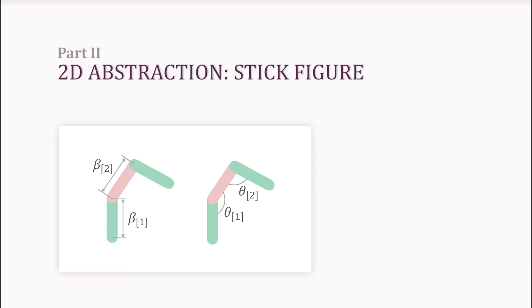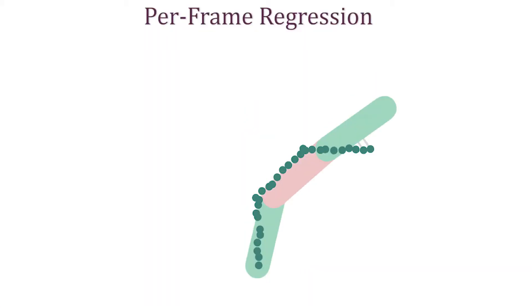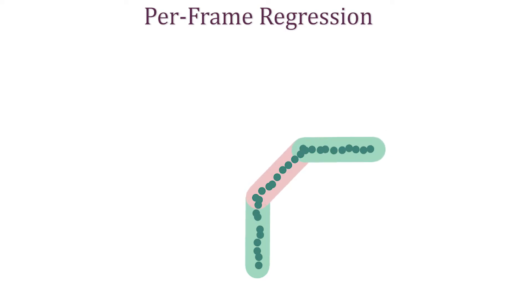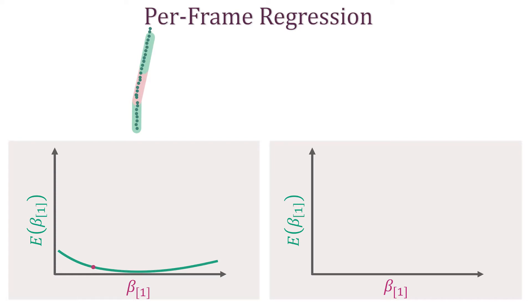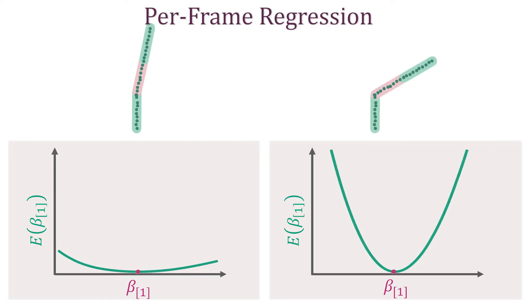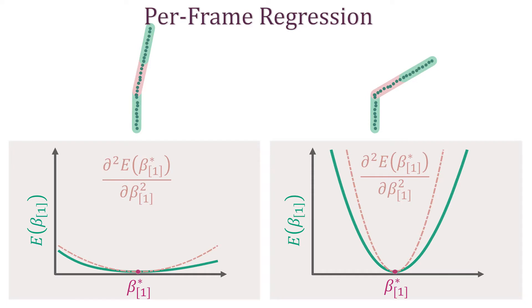Let us abstract a finger with a simple 2D stick figure. Our registration energy is the sum of closest point distances. When the finger is straight, the energy does not change much as we vary the length of the phalanx. When the finger is bent, the energy becomes more sensitive to changes in shape. The Hessian of the registration energy captures the width of the valley in the energy landscape.